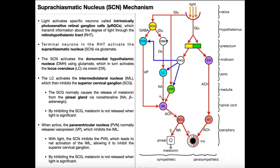In turn, the dorsomedial hypothalamic nucleus activates the locus coeruleus, or LC. This activation is through orexin, another neurotransmitter released by the DMH, which activates the locus coeruleus. There is also some crosstalk via the periaqueductal gray matter, but we'll come back and look at that in another video.